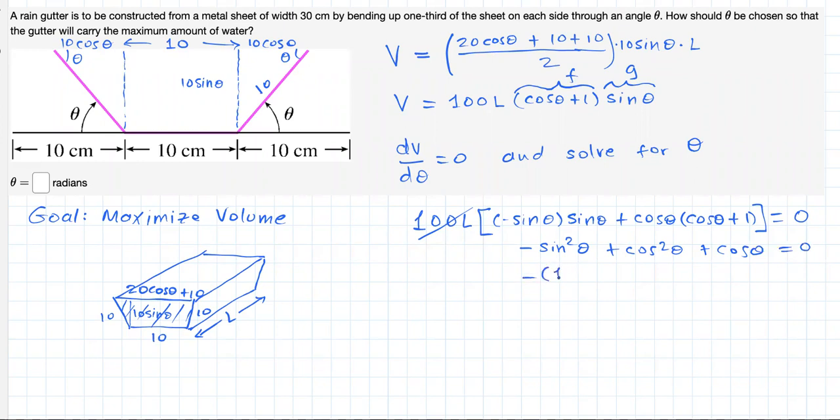Notice this guy from trigonometry is 1 minus cosine squared of theta. Plus cosine squared of theta, plus cosine of theta equals 0.